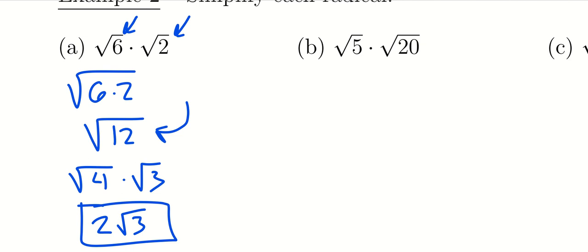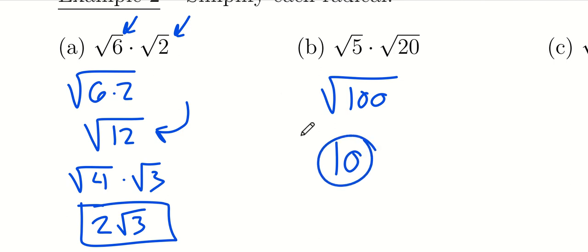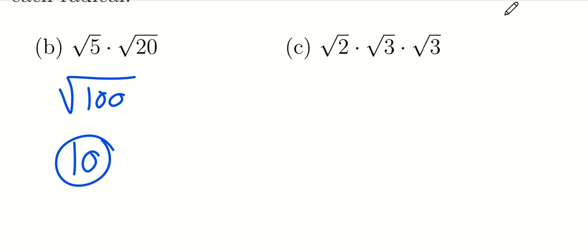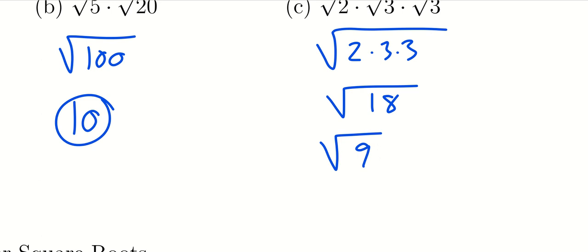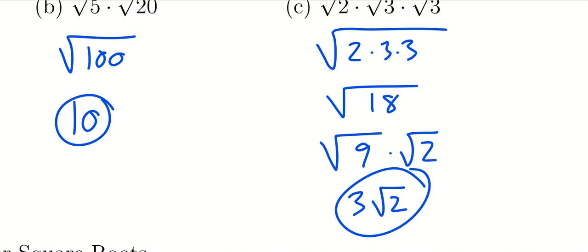For √5 × √20: that equals the square root of 100, which is simply 10. For √2 × √3 × √3: we multiply everything under one radical — 2 × 3 × 3 = 18 — giving the square root of 18. The perfect square 9 divides 18 twice, so we rewrite as the square root of 9 times the square root of 2. The square root of 9 is 3, so the answer simplifies to 3√2.